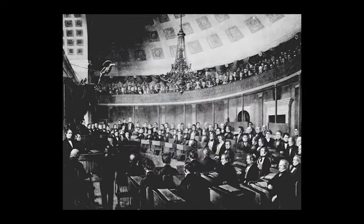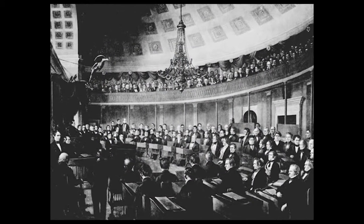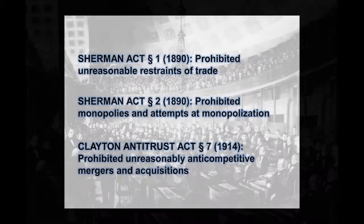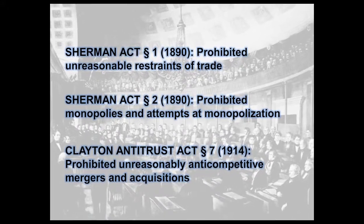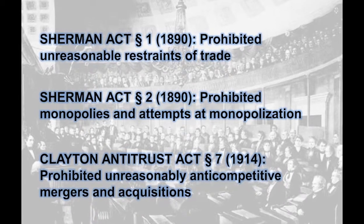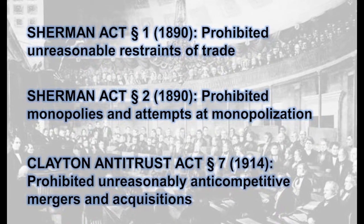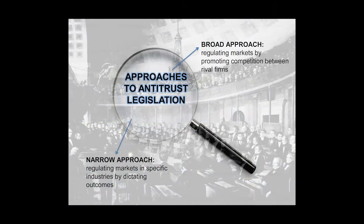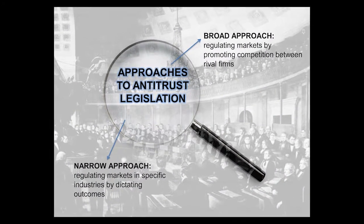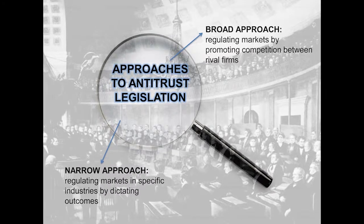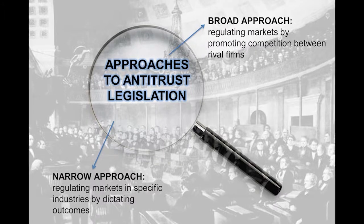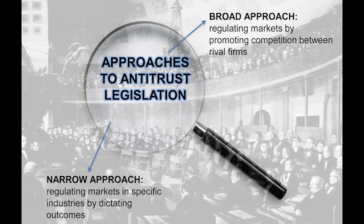Throughout the history of the United States, antitrust enforcement has involved debates about the political and economic effects of bigness and consolidation. Congress largely set the broad parameters for antitrust law from the late 19th century through the mid-20th century by enacting the Sherman and Clayton Antitrust Acts. Congress may take the broad approach of promoting competition between rival firms to regulate markets.